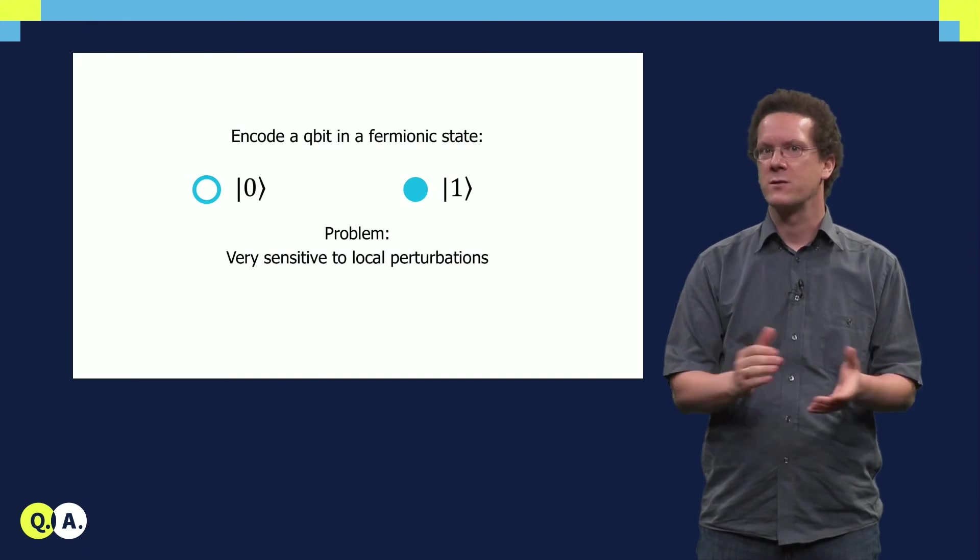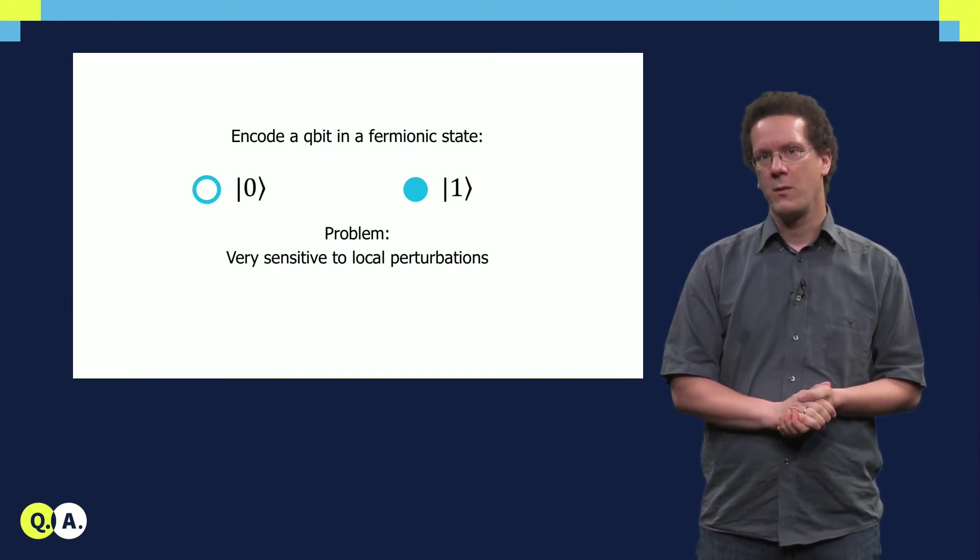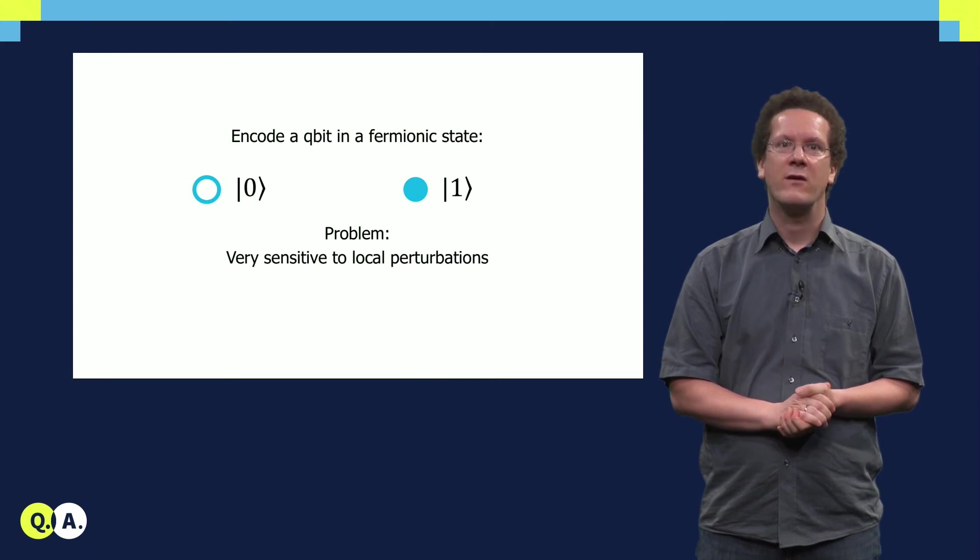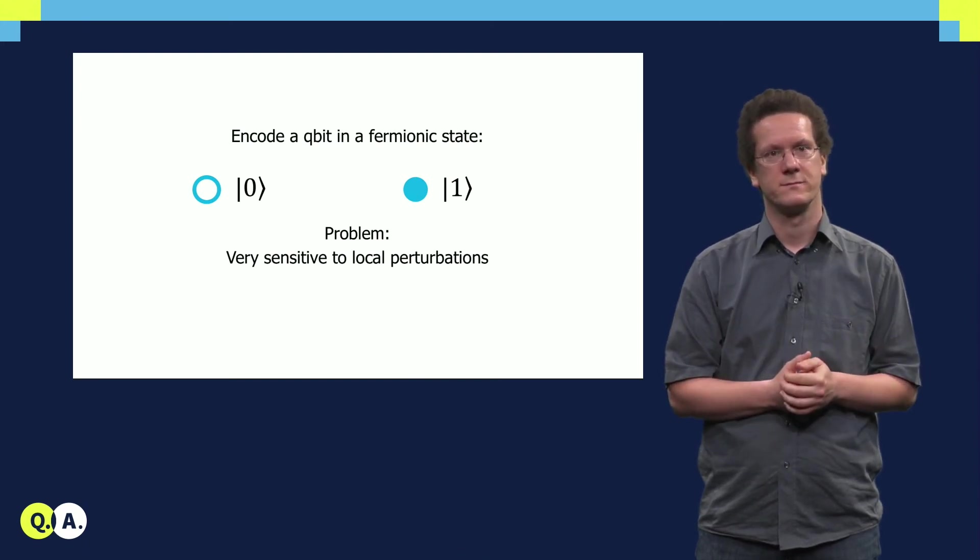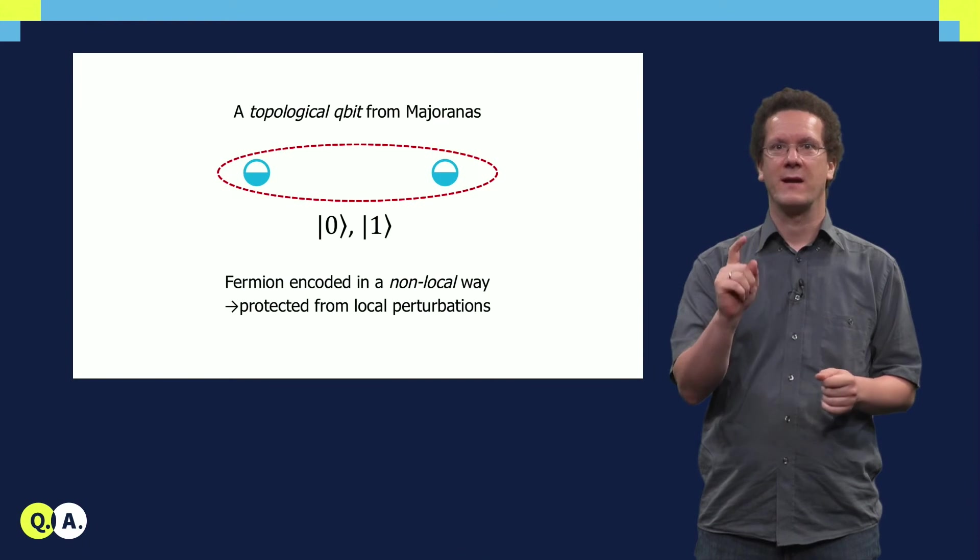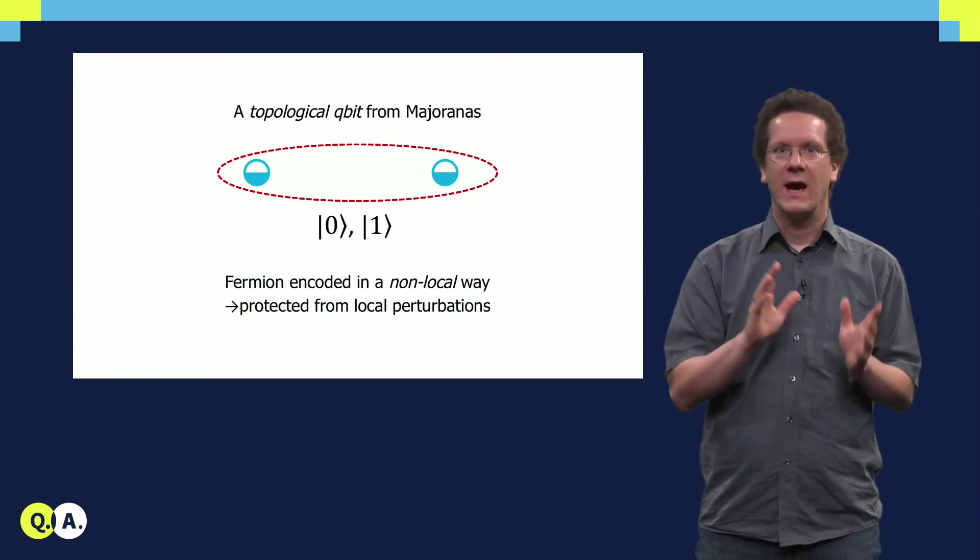An example for this are charged qubits. The problem is that these are usually very sensitive to local perturbations.